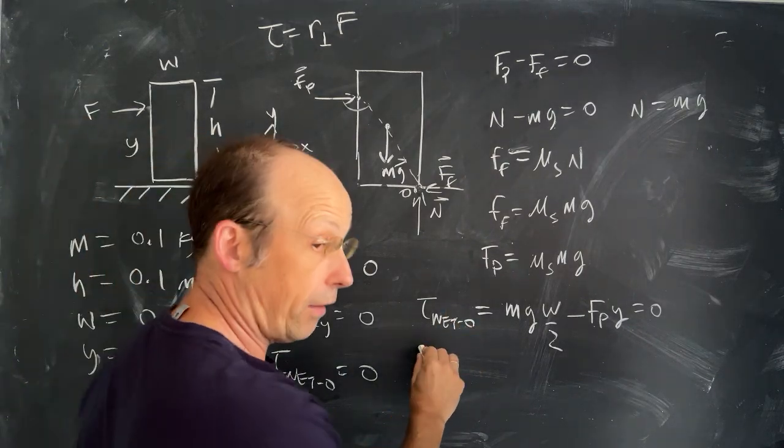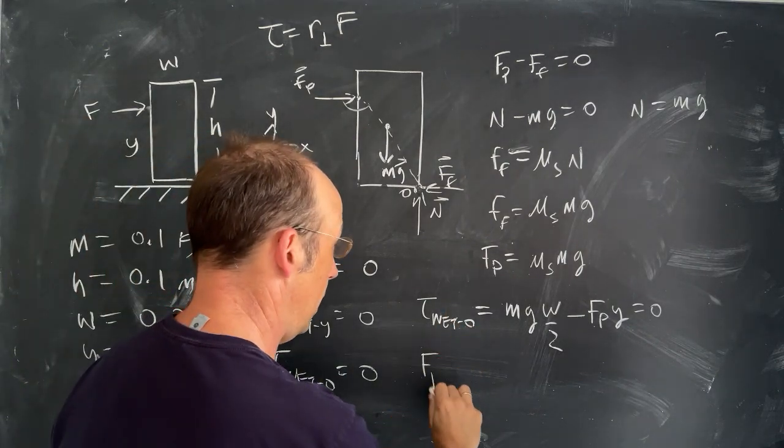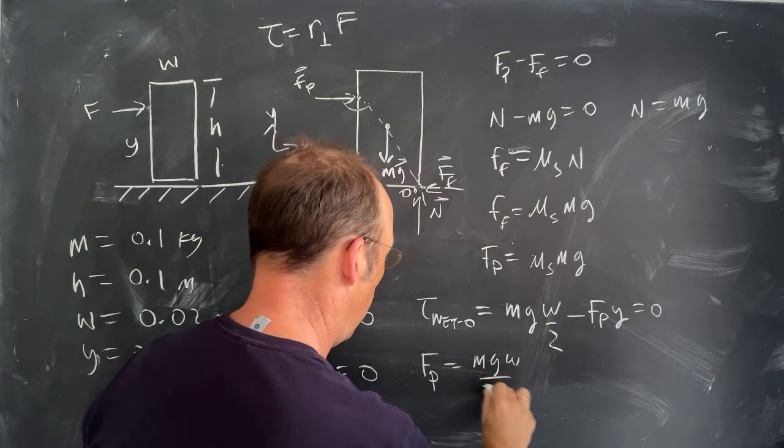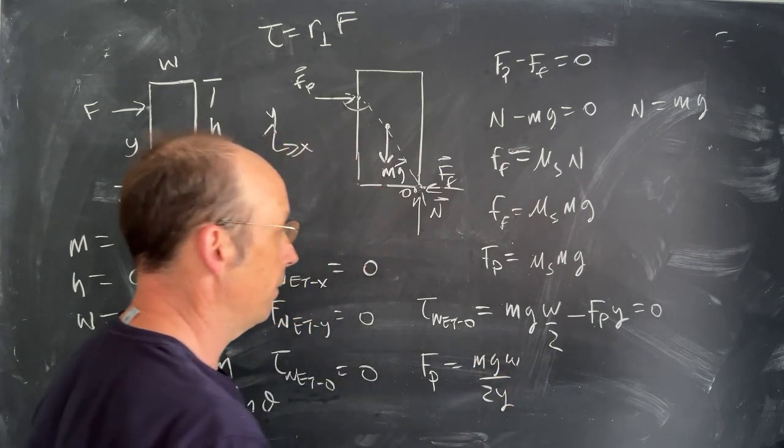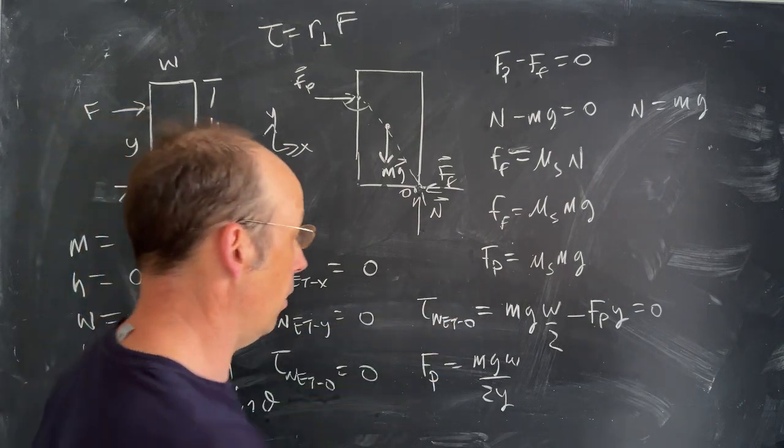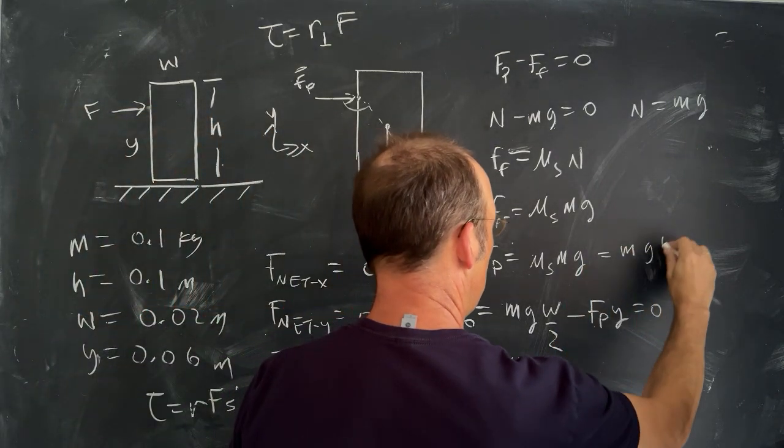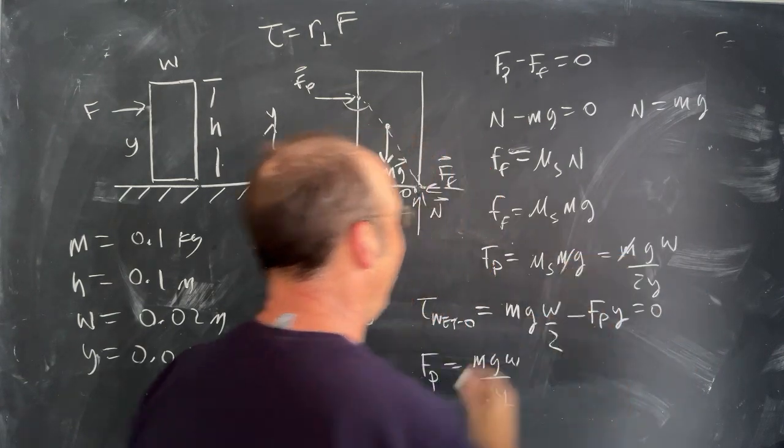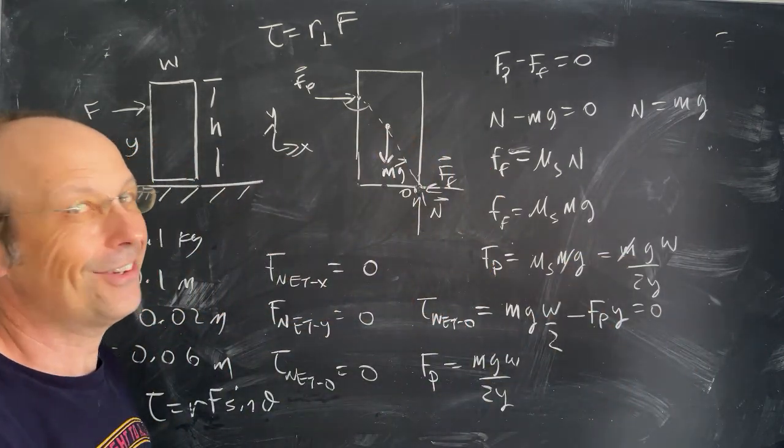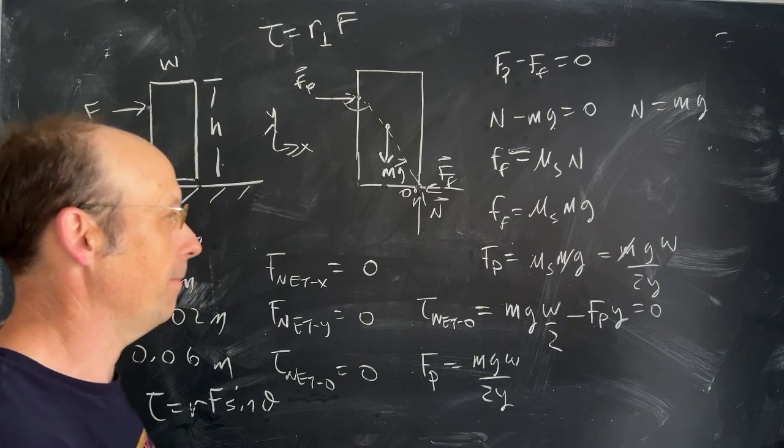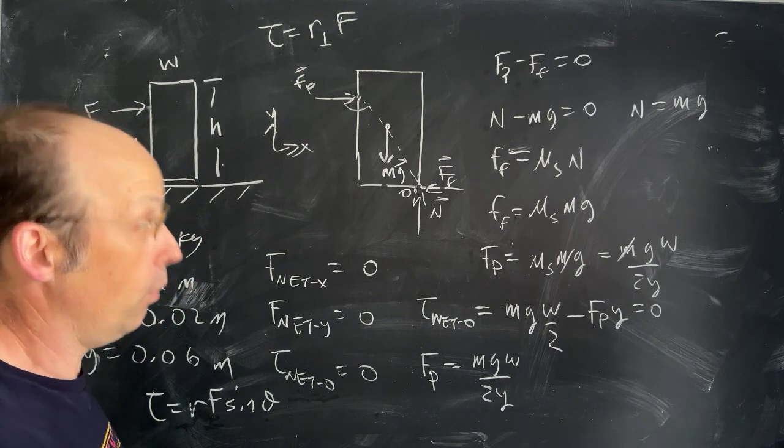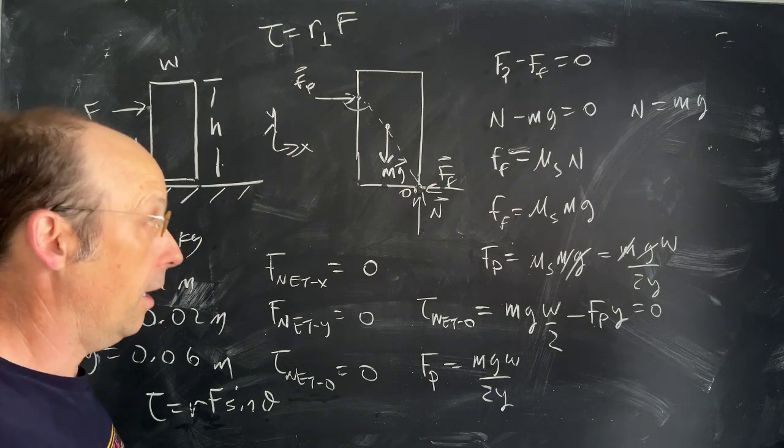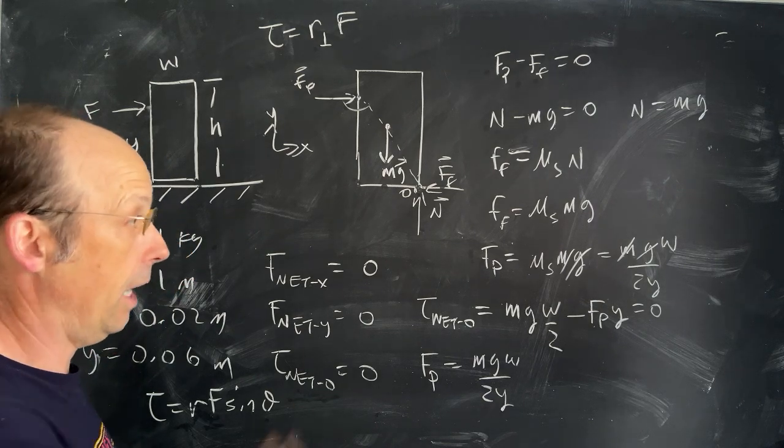So from this, I can solve for Fp. Fp is going to be mgw over two y. Now I can put that in up here, and I get mgw over two y. Oh, look at that. I told you the mass wouldn't matter. I told you, but you didn't listen. And I can, oh, the g cancels too. Doesn't matter if I do this on Earth, the moon, or Mars. It's going to be the same. So now I'm done.